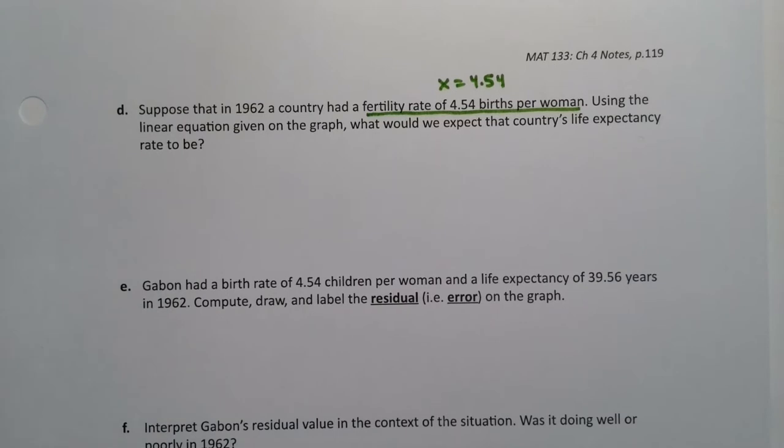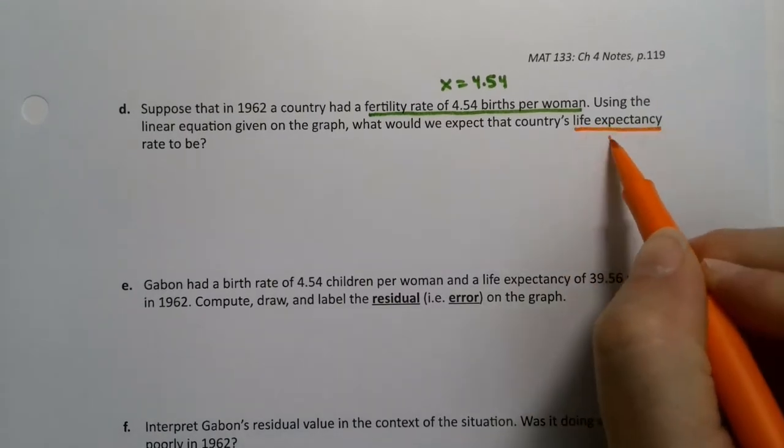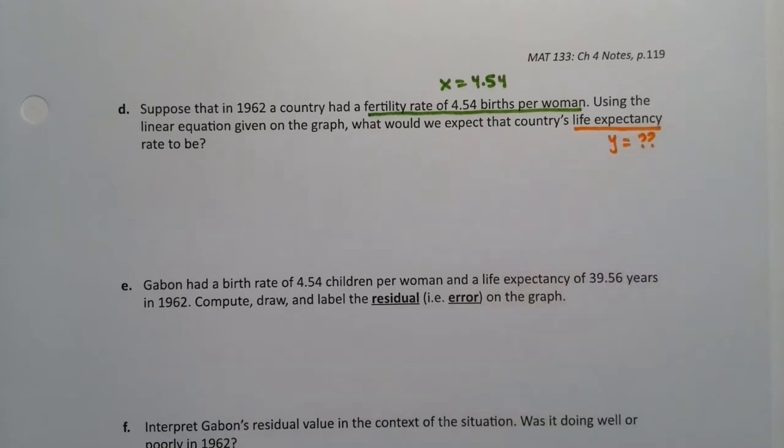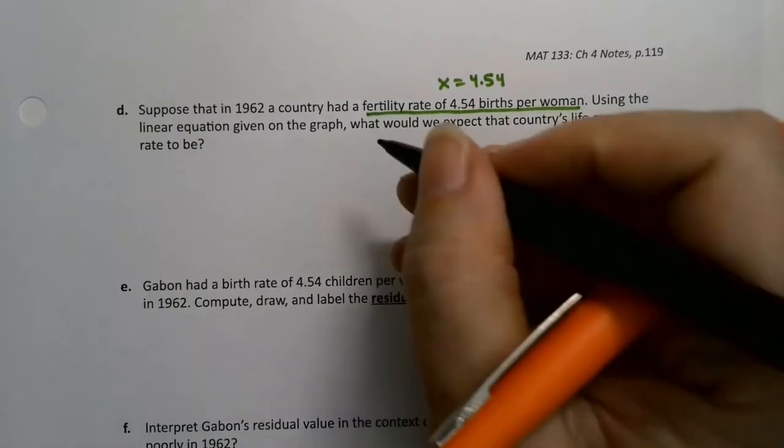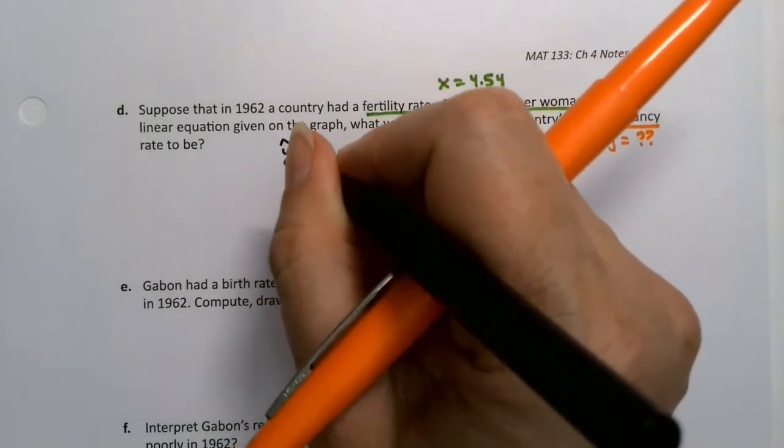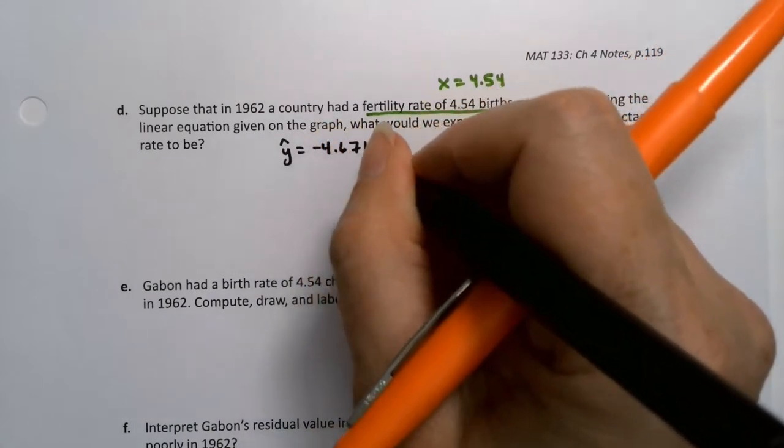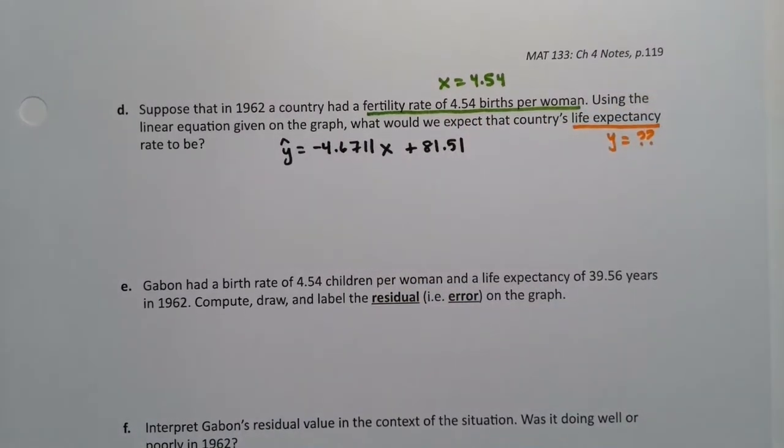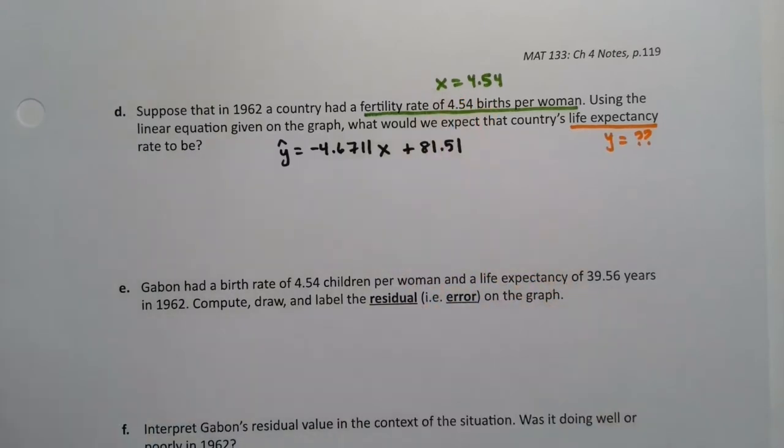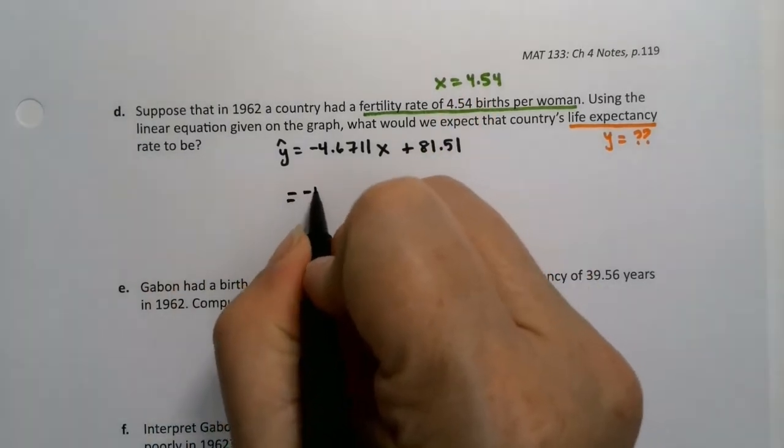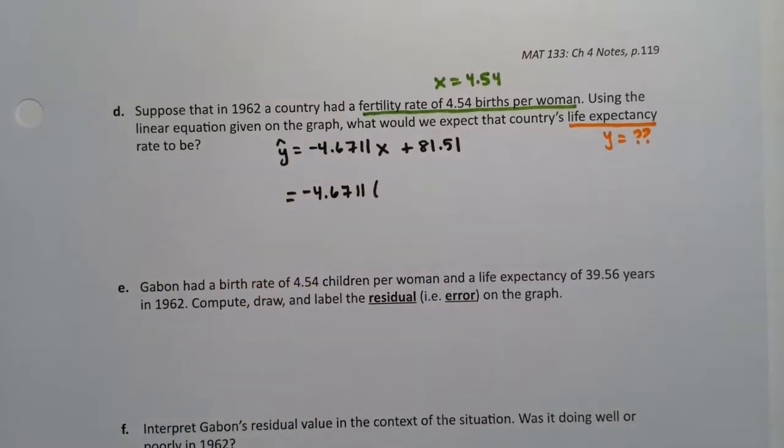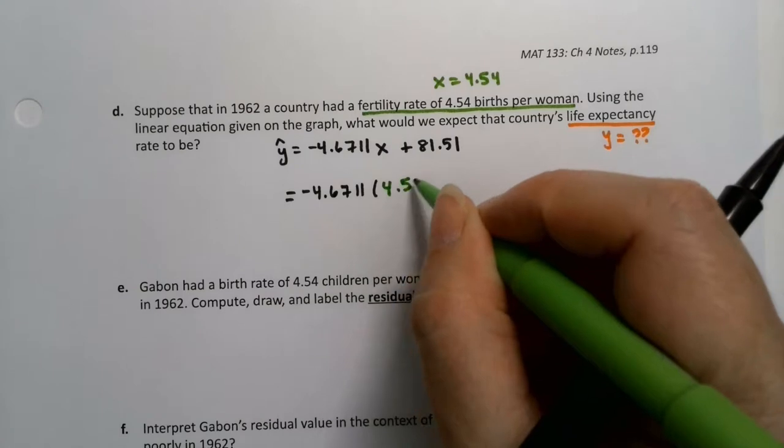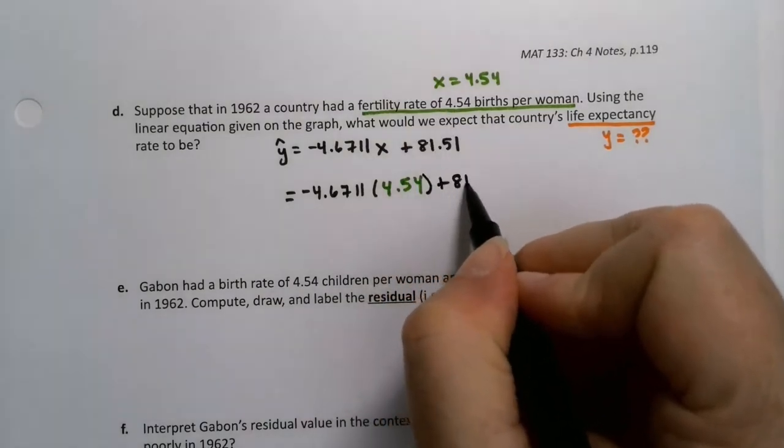Using the linear regression equation given on the graph, what would you expect the country's life expectancy to be? Okay. So again, let me write this equation. Y hat equals negative 4.6711X plus 81.51. At least that's what Excel gives to us. So they're telling us that X is 4.54. So we can write negative 4.6711 times 4.54 plus 81.51.